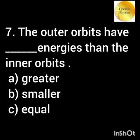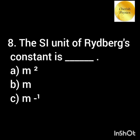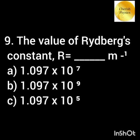The outer orbits have higher energies compared to the inner orbits. The SI unit of Rydberg's constant is m⁻¹. The numerical value of Rydberg's constant R is equal to 1.097 × 10⁷ m⁻¹.